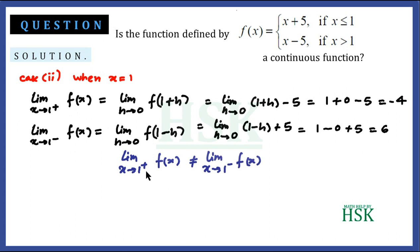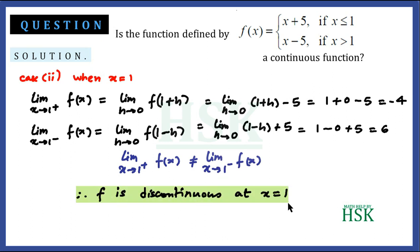Clearly the left hand limit (6) and right hand limit (-4) are unequal. Therefore, the function is discontinuous at x = 1.